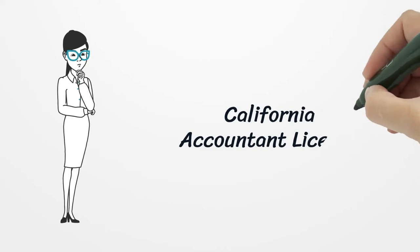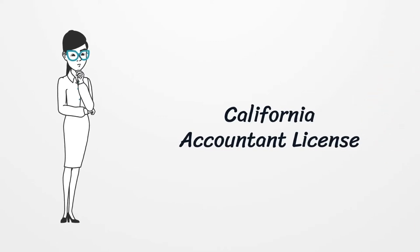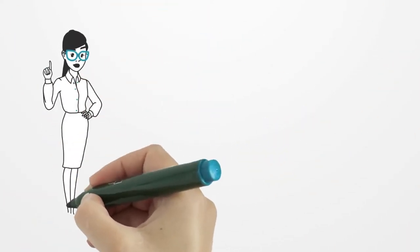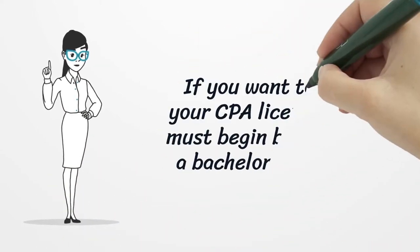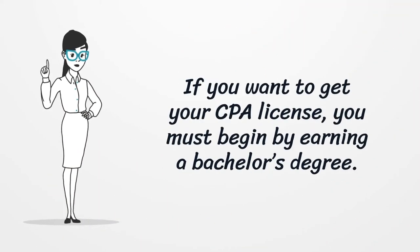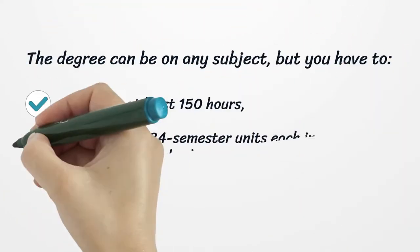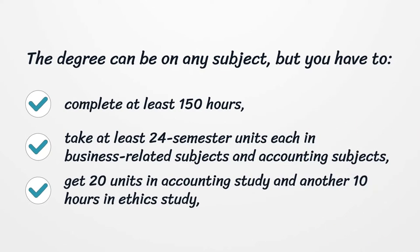California Accountant License. If you want to get your CPA license, you must begin by earning a bachelor's degree. The degree can be on any subject, but you have to complete at least 150 hours and take at least 24 semester units each in business-related subjects and accounting subjects.